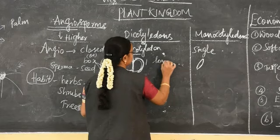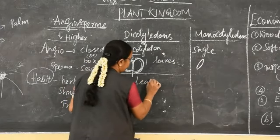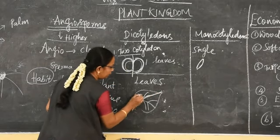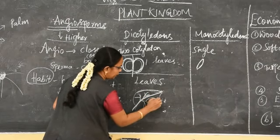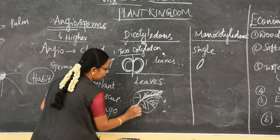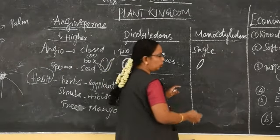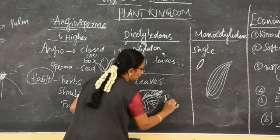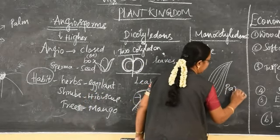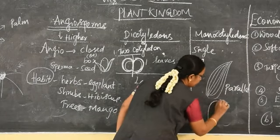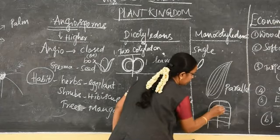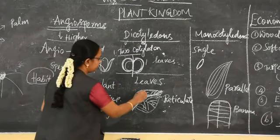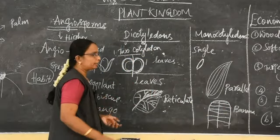About the leaves: when we take dicotyledon, they show reticulate venation. Venation means the type of veins and how they are arranged on the leaf. Dicotyledon veins show a reticulate pattern. But if we take monocotyledon — for example in grass or banana — we can see parallel venation, where the veins are parallel to each other. So in dicot we see reticulate venation, and in monocot we see parallel venation.